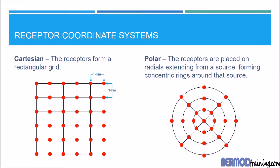For example, assume the Cartesian grid to the left is five by five kilometers — that means each receptor is one kilometer away from the next receptor in the x and y directions. The polar grid on the right has radials every 45 degrees and receptors spaced one kilometer apart on each radial. As receptors get further from the source, the distance to the next receptor on each ring gets larger and larger. For that reason, polar grids are used less often than Cartesian grids, so we are going to focus on Cartesian grids in the rest of this video.